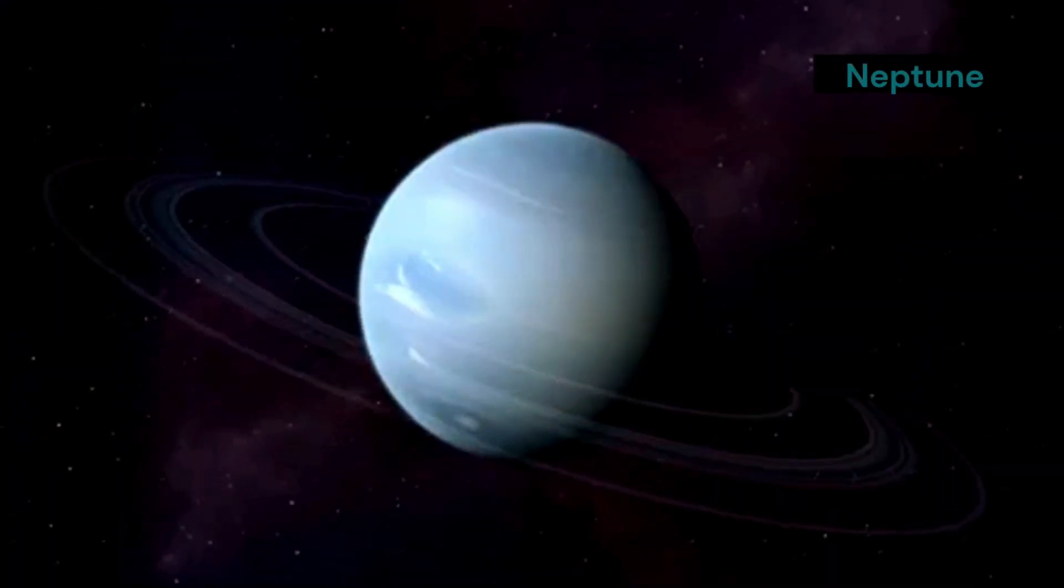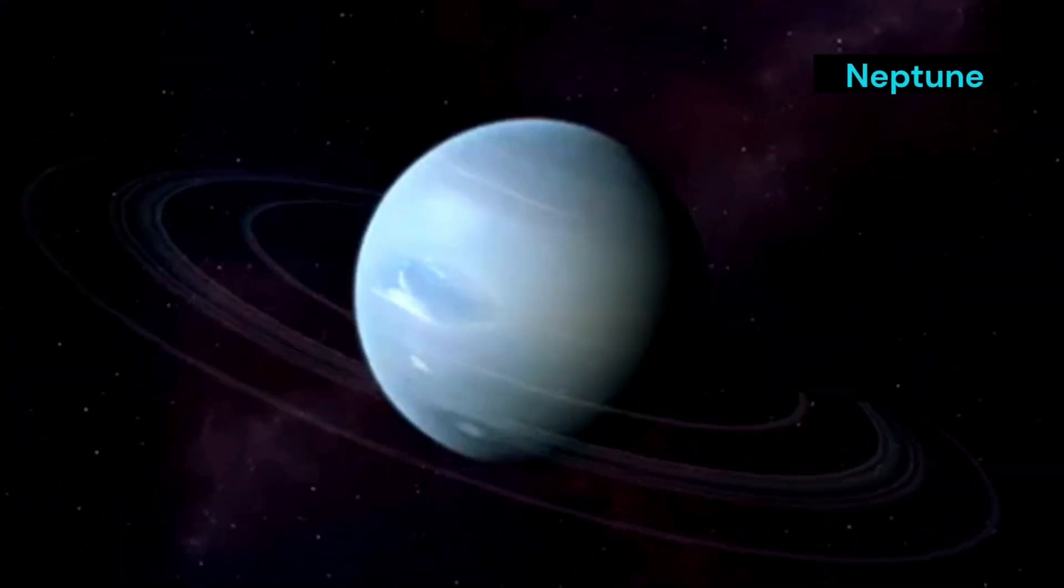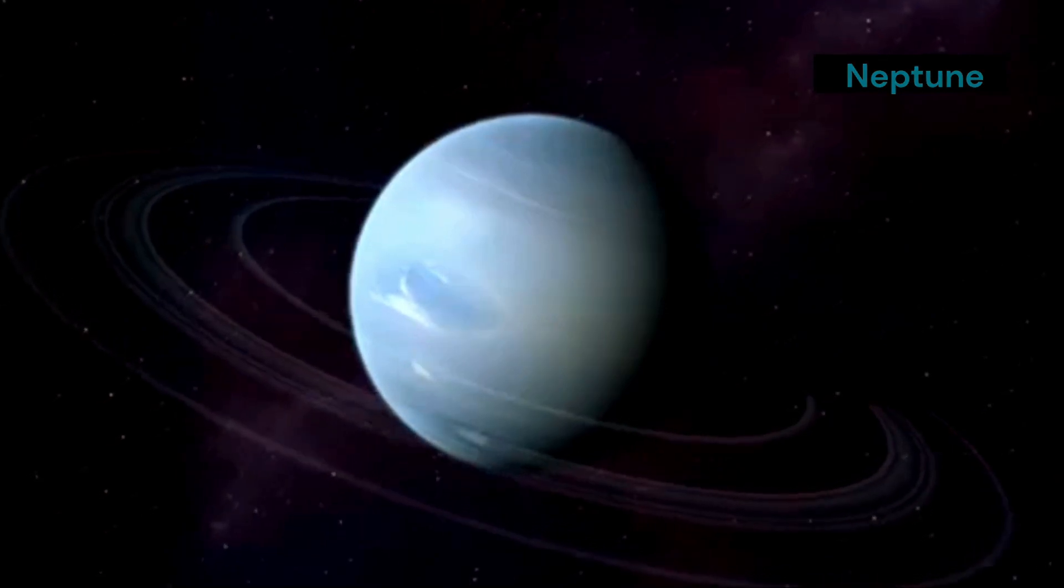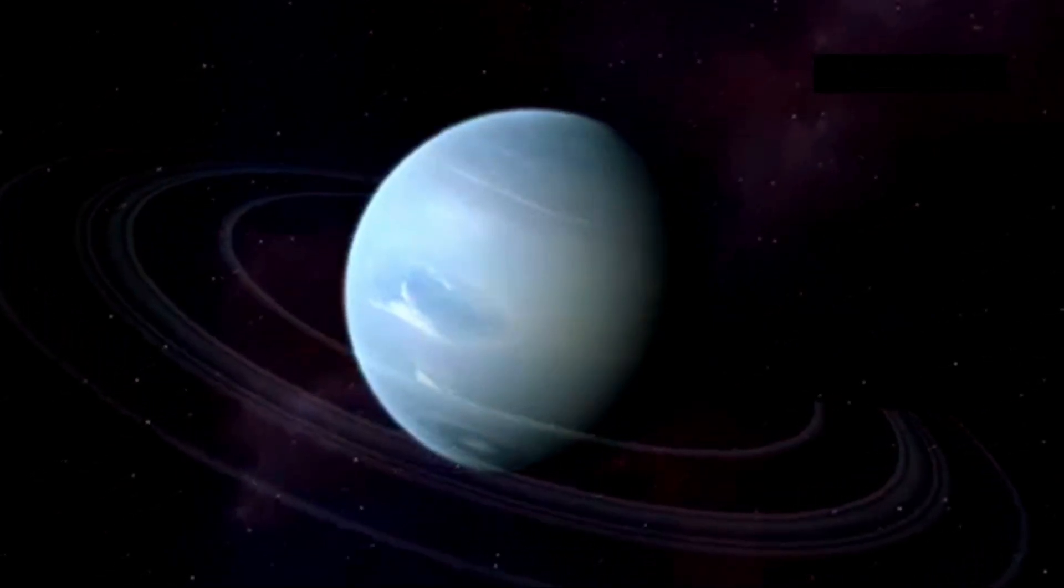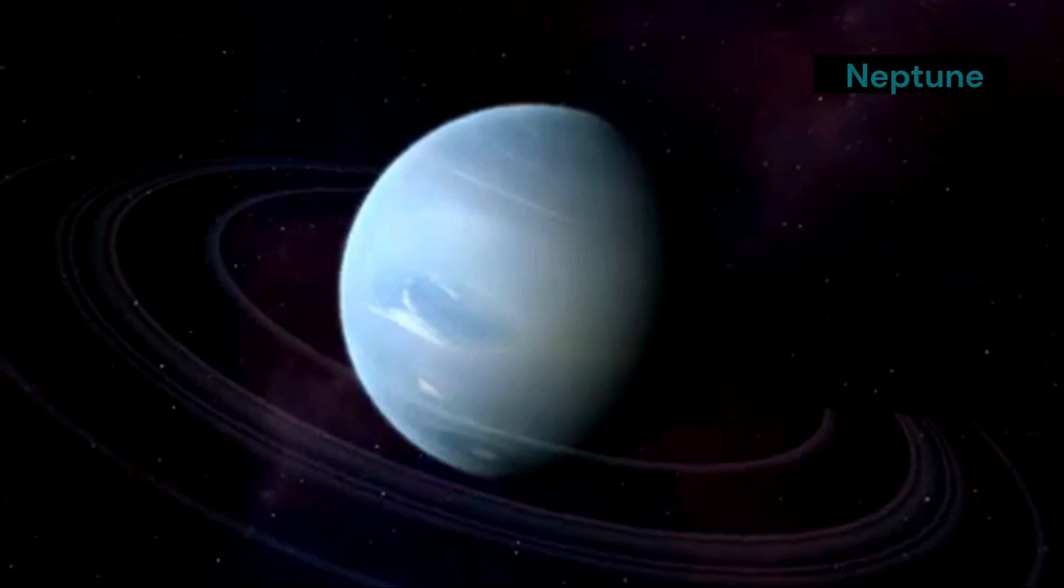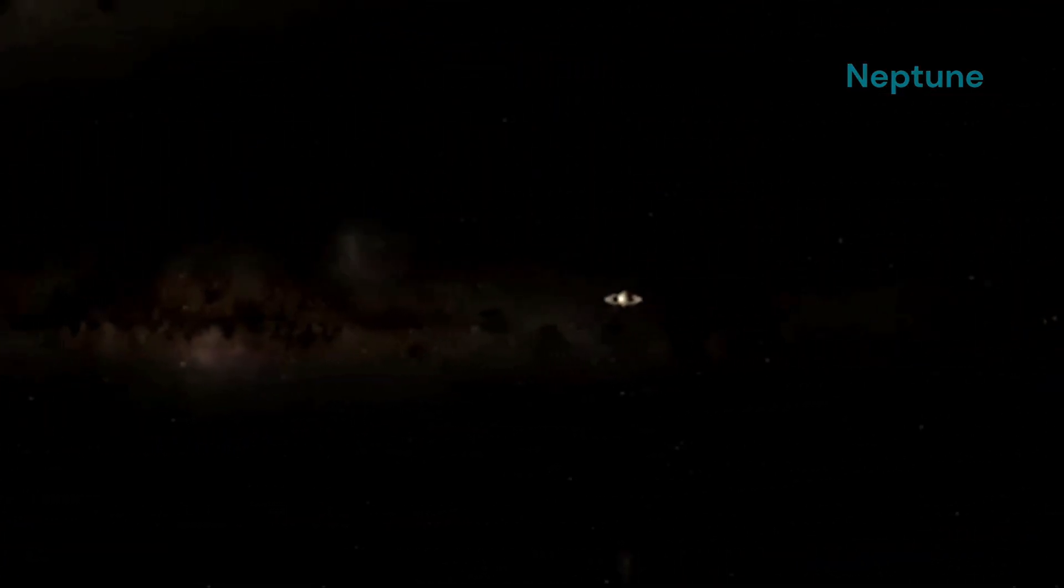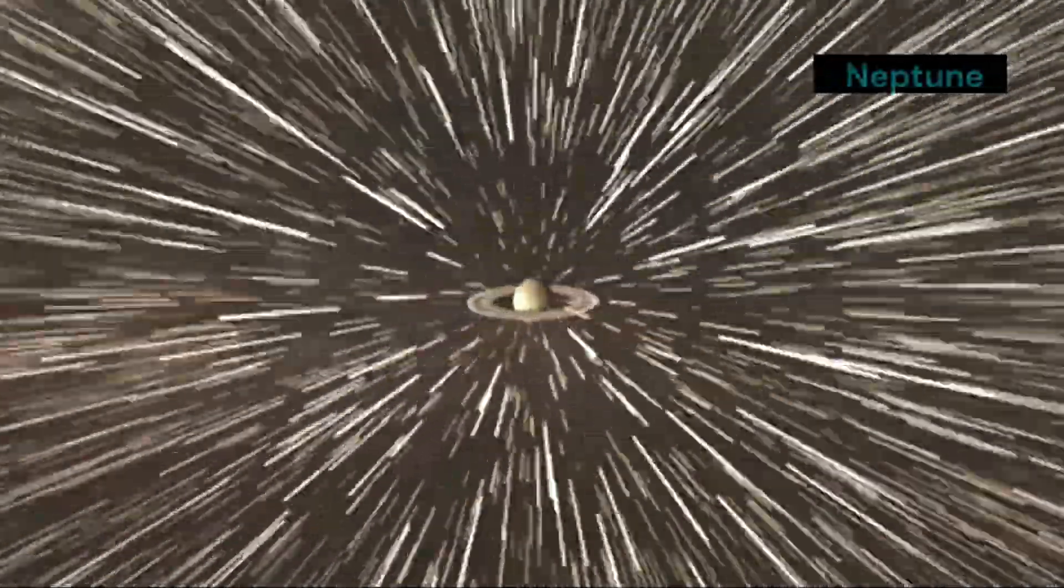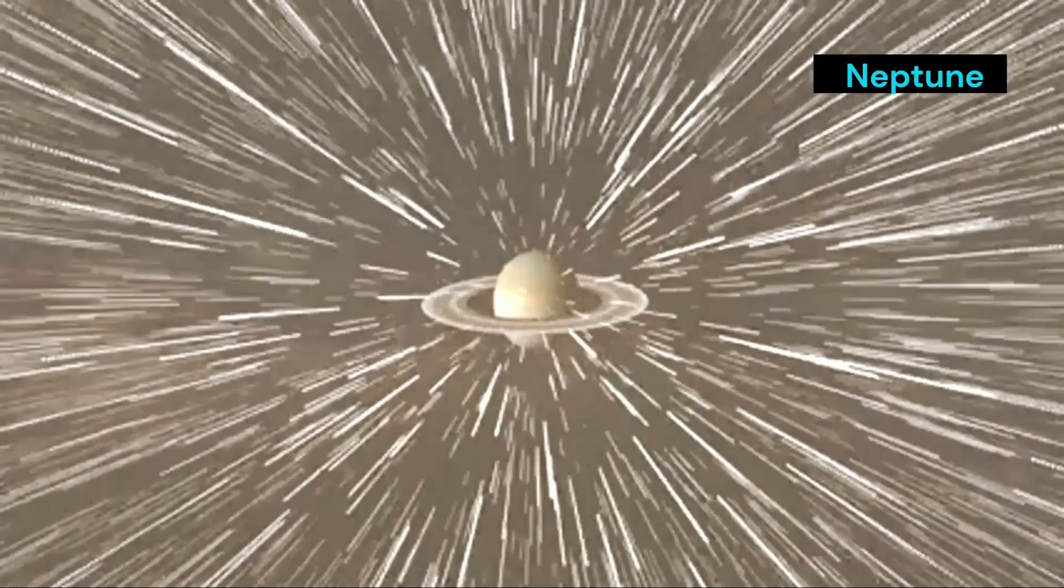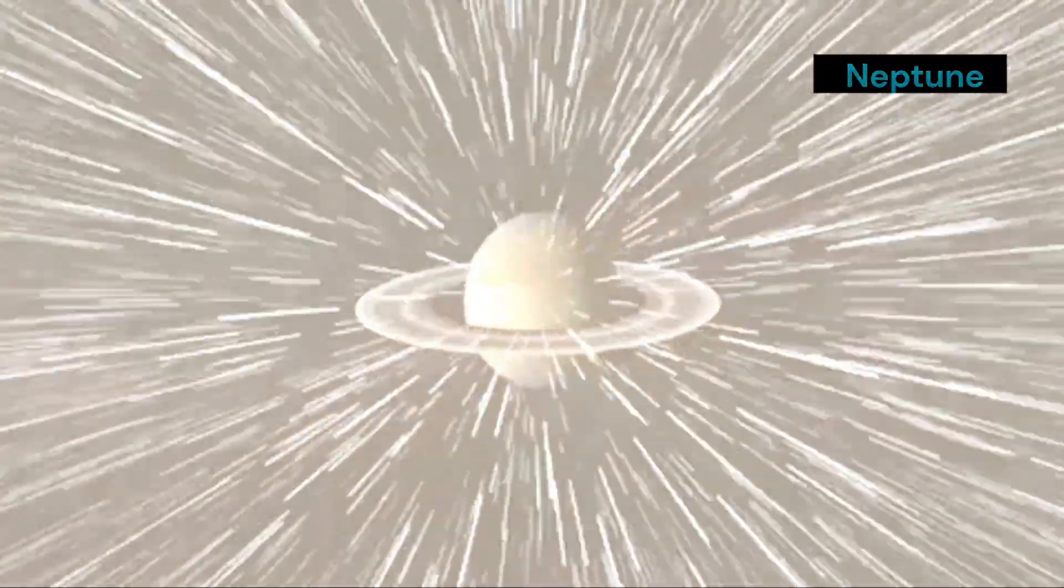Neptune also has a faint ring system, made up of dust and ice particles. These rings are not as prominent as those of Saturn, but they add to the planet's mysterious allure. These rings are much fainter than the rings of Saturn. They are composed of dark material, which makes them difficult to observe from Earth. However, they play a crucial role in the planet's overall structure and dynamics.